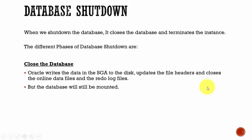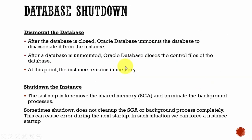There are three phases whenever you shut down the database. They are: you close the database, you dismount the database, and you shut down the instance.